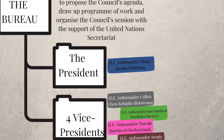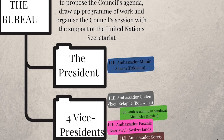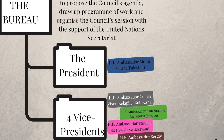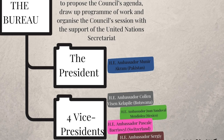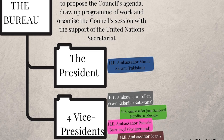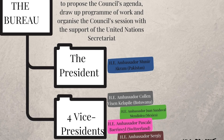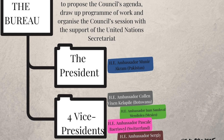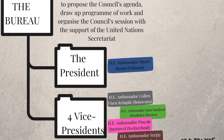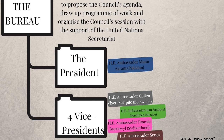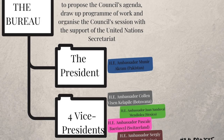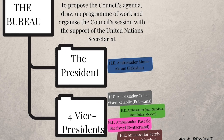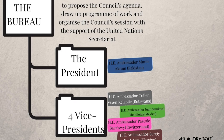The president, along with four vice presidents, make up what is called a bureau. Essentially, the main functions of the bureau are to propose the council's agenda, draw a program of work, and organize the council session with the support of the United Nations Secretariat. ECOSOC organizes its activities through short sessions, round tables, preparatory meetings, and panel discussions.